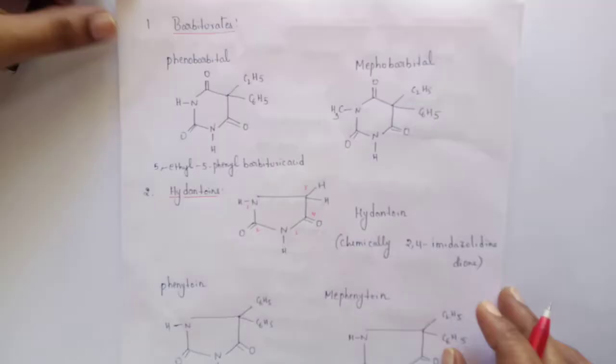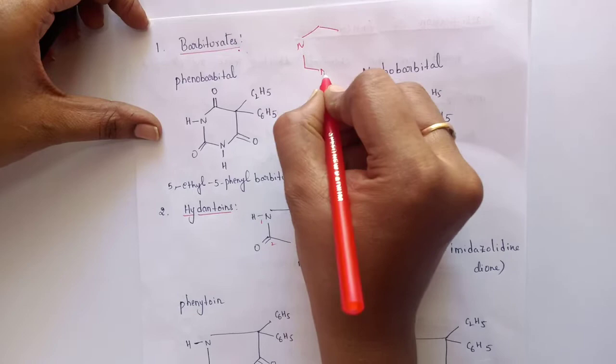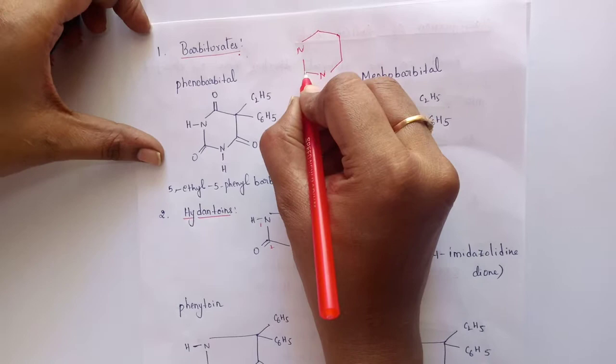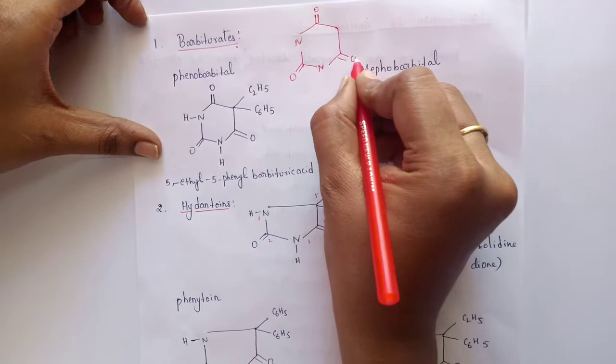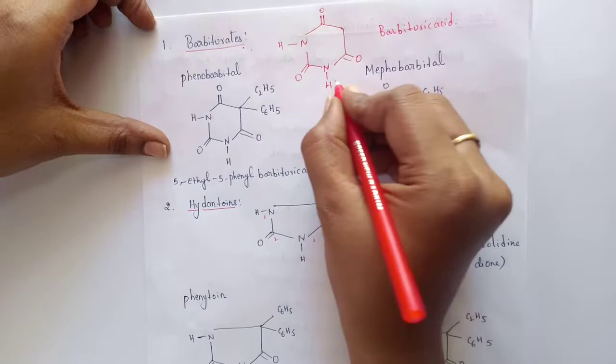Coming to the first class of compounds — barbiturates. Barbiturates consist of the basic structure of pyrimidine, a 6-membered ring which possesses 2 nitrogen atoms separated by 1 carbon atom. From this pyrimidine, it possesses 3 ketones. This is the basic structure of barbituric acid, which possesses 2 hydrogen atoms.